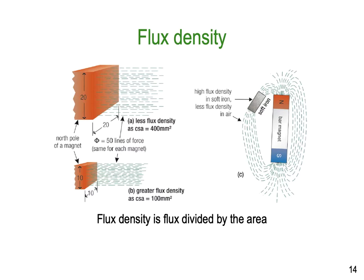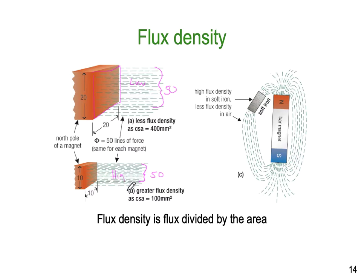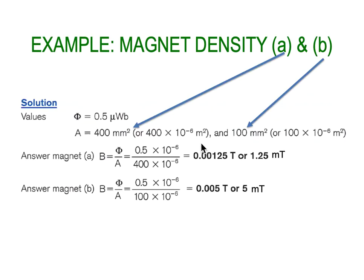Here's a little example. Let's say the number of Webers is 0.5 microWebers, and we have two areas to work with: area A is 400 millimetres squared and area B is 100 millimetres squared — just like our previous 20×20 and 10×10 example. We have 0.5 microWebers.